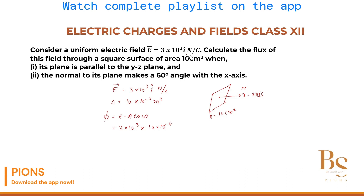The electric field is along the x-axis — î cap — and the normal vector to the area is also along the x-axis. So theta is 0 degrees. Theta is 0 degrees because the electric field and the normal to the area are both pointing in the same direction. This gives 3 into 10 to the power 3 multiplied by 10 into 10 to the power minus 4, which equals 3. The unit is Newton meter square per coulomb. This is our first part.